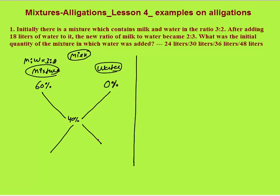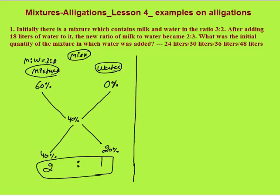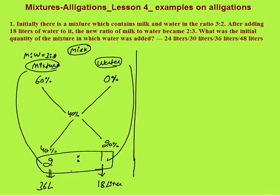The new ratio of milk to water in the final mixture becomes 2 is to 3, so milk percent is 40 percent. Again subtract diagonally: smaller value from larger — 40 minus 60 gives 20 percent, and 40 minus 0 gives 40 percent. The ratio is 2 is to 1, meaning mixture and water are mixed in ratio 2 is to 1. Water added is 18 liters, so if 1 part is 18 liters, the mixture should be 36 liters. The answer is 36 liters, option C.